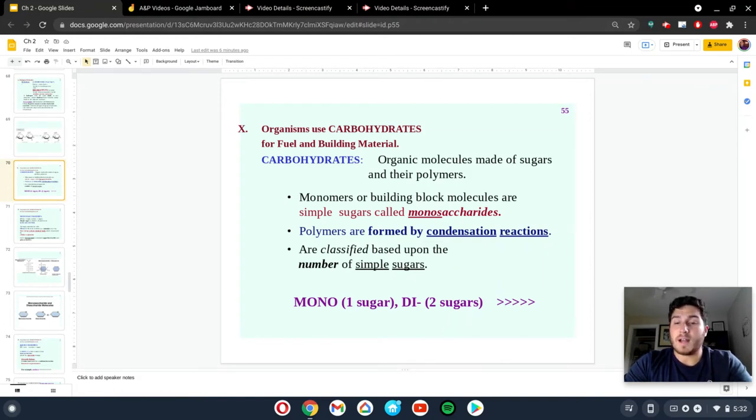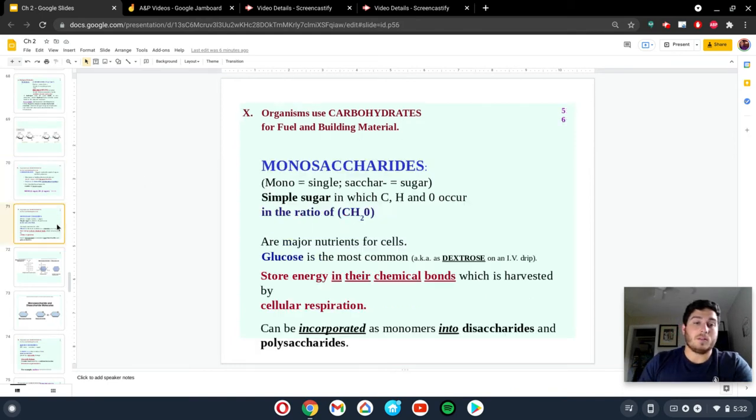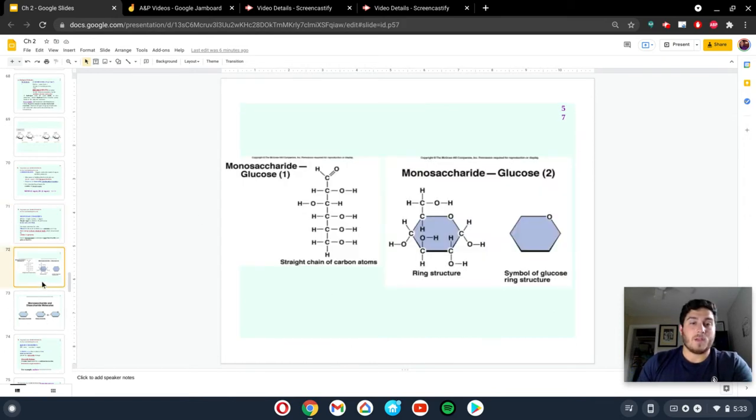All these are formed using condensation reactions, like I mentioned before. Monosaccharides are simple sugars like glucose. Their energy is stored within them, specifically in the bonds. We'll talk more about that in chapter four. They take on multiple shapes. Some of them are going to be like this ring structure. Others may be more linear.